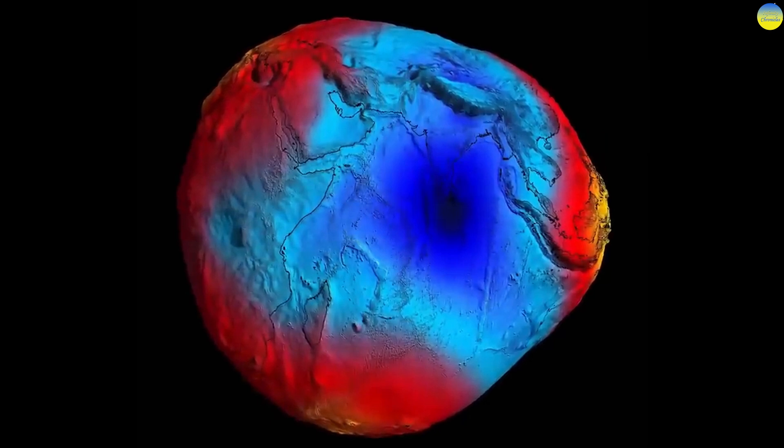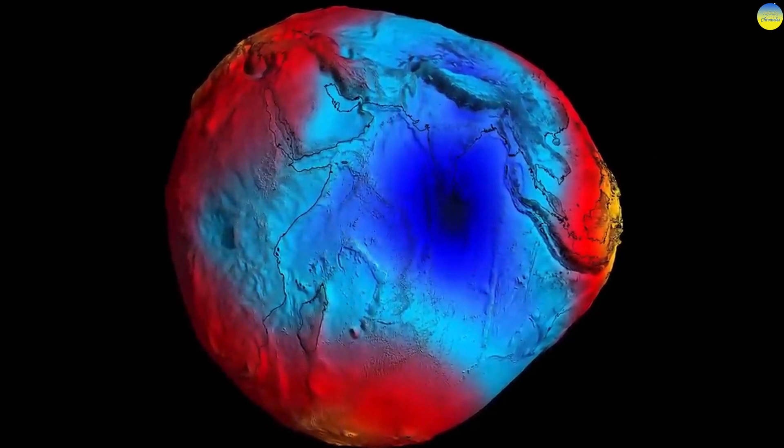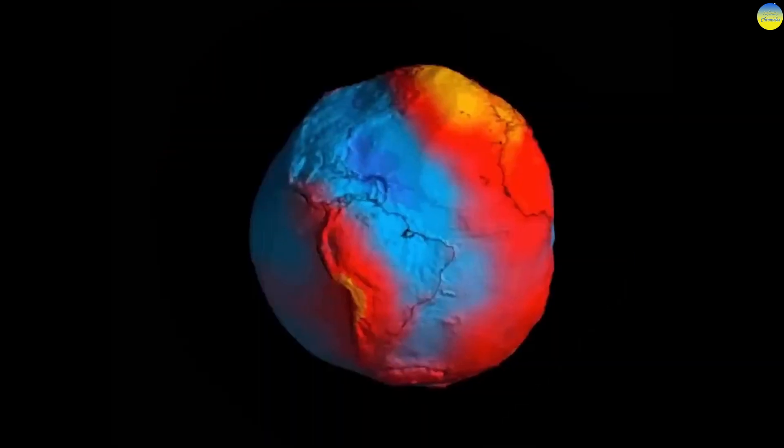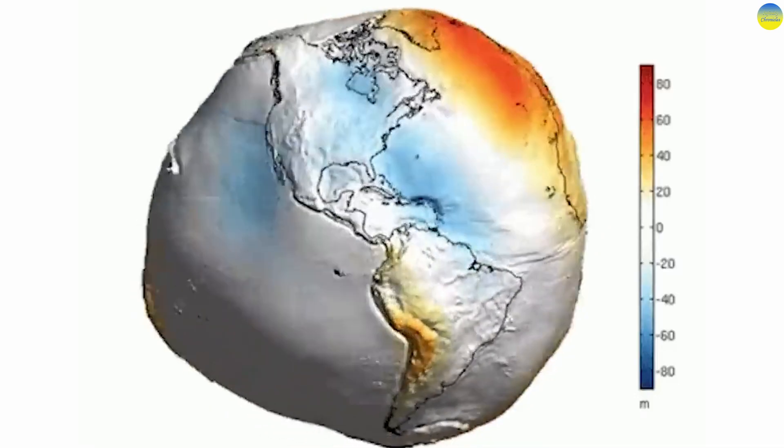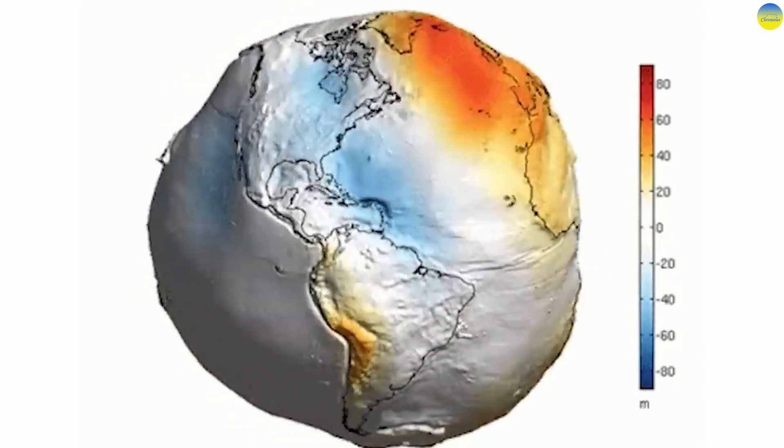Another most approximate form of the Earth is geoid. A geoid is a surface with an irregular complex shape, unlike the ellipsoid surface, and it is still much smoother than the physical surface of the Earth. Most often, this model is used in cartography and geodesy.